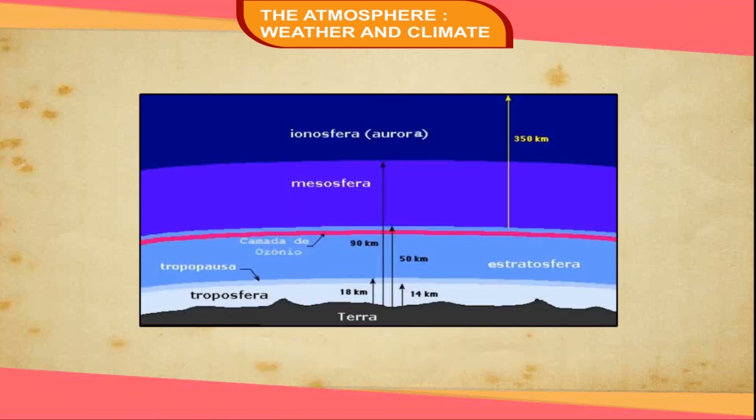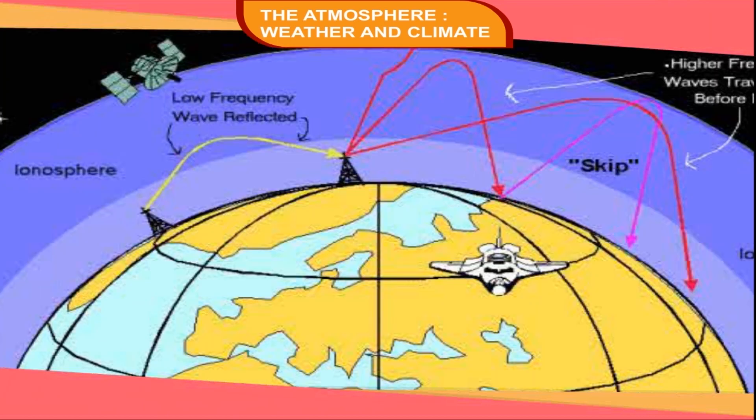Ionosphere. It lies above the mesosphere and extends up to a height of about 400 km above the earth's surface. It contains electrically charged particles called ions, which help in the transmitting of communication signals. Radio waves are reflected back to the earth from this layer. Communication satellites help in transmitting the signals back to earth. The temperature rises rapidly with altitude in this layer.